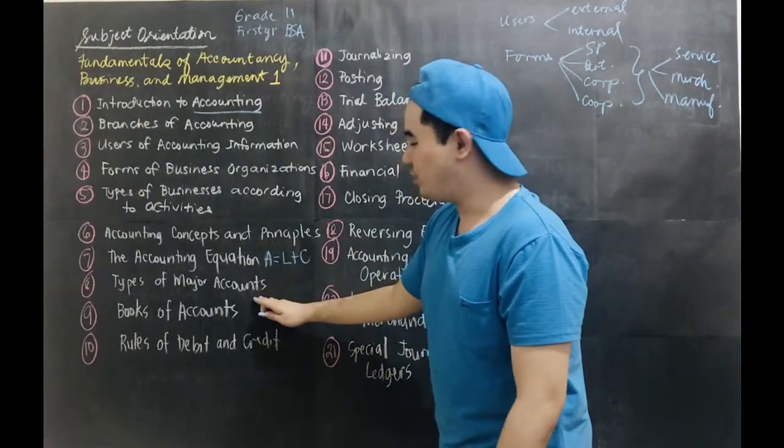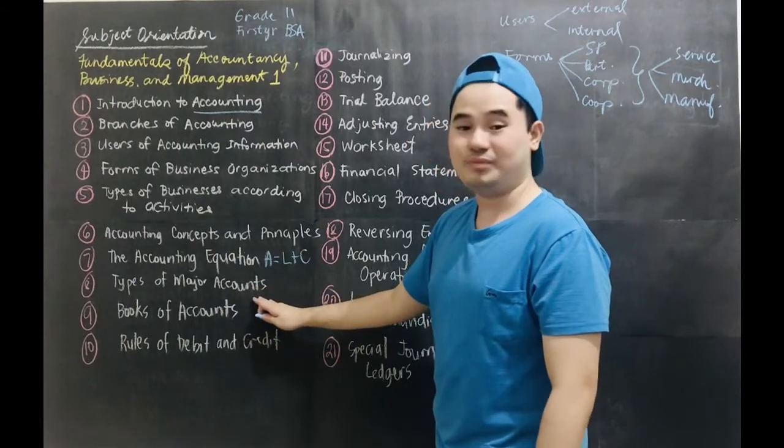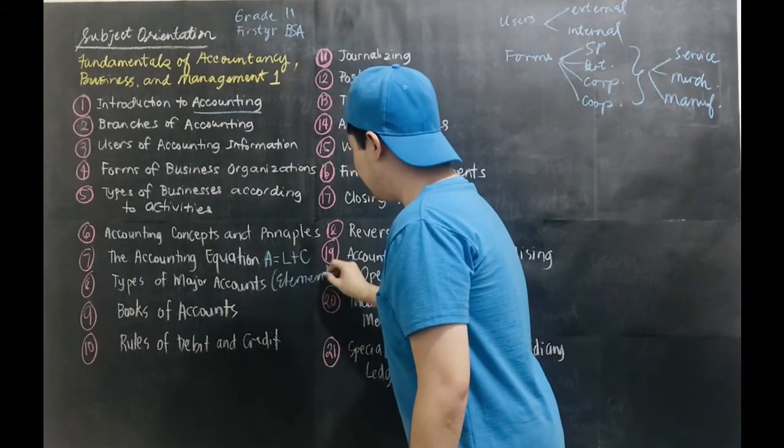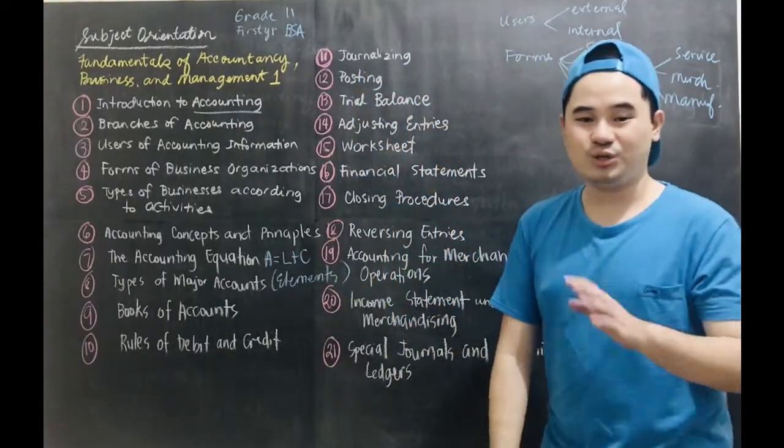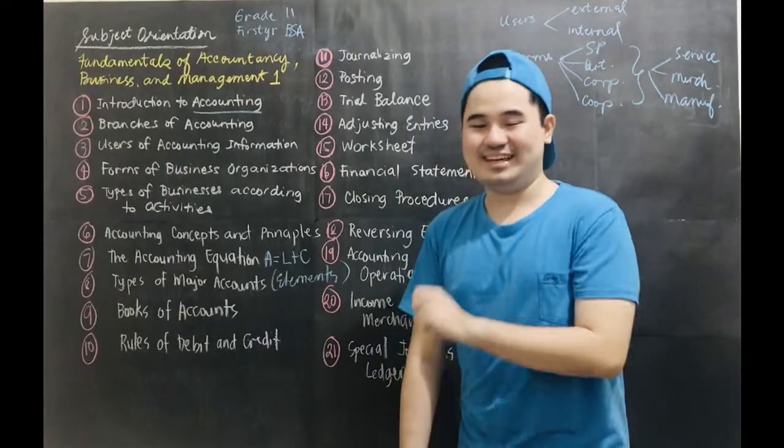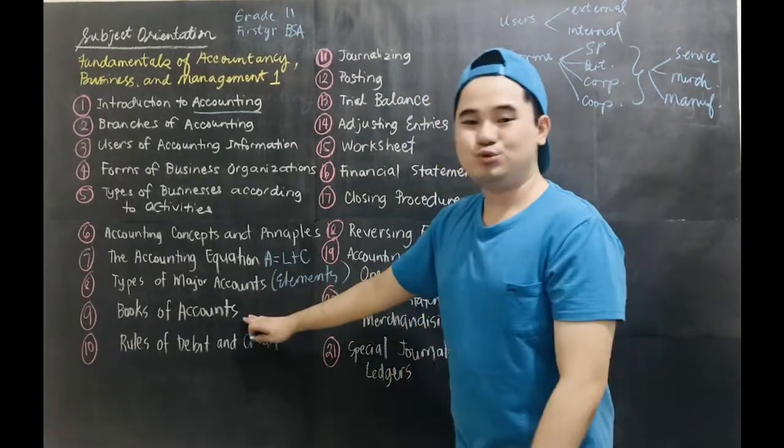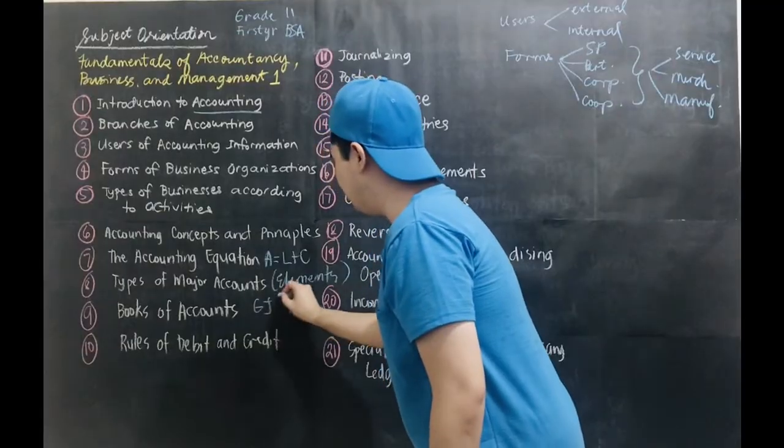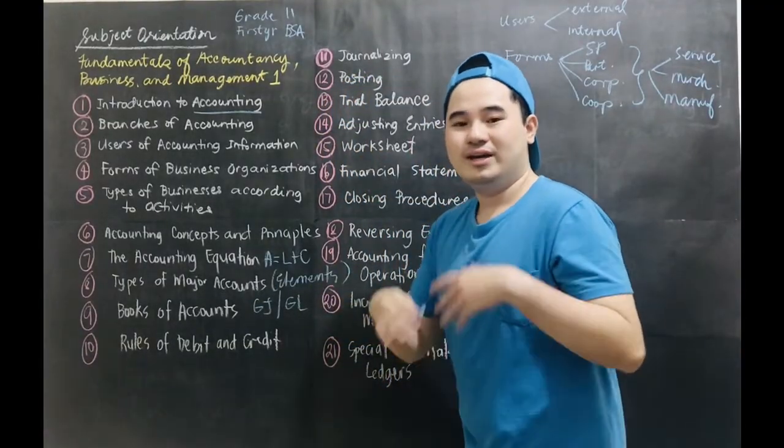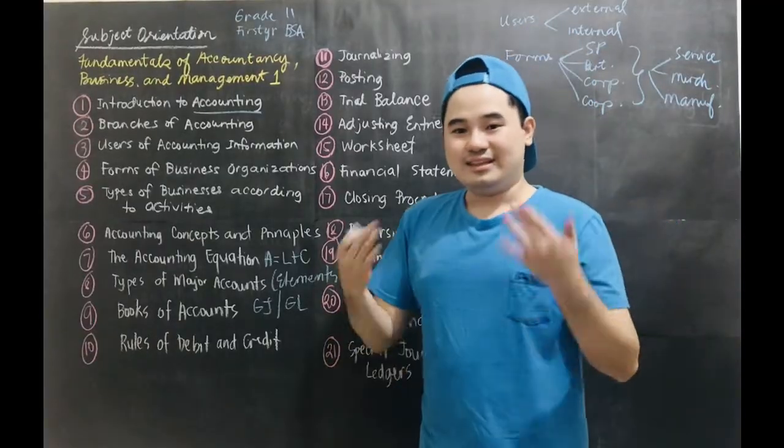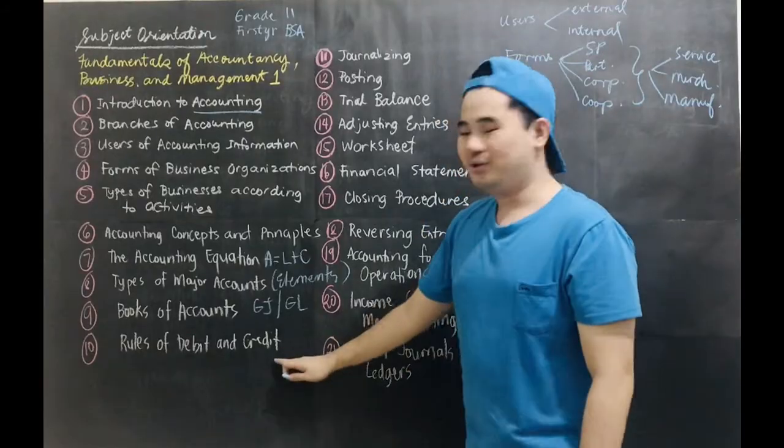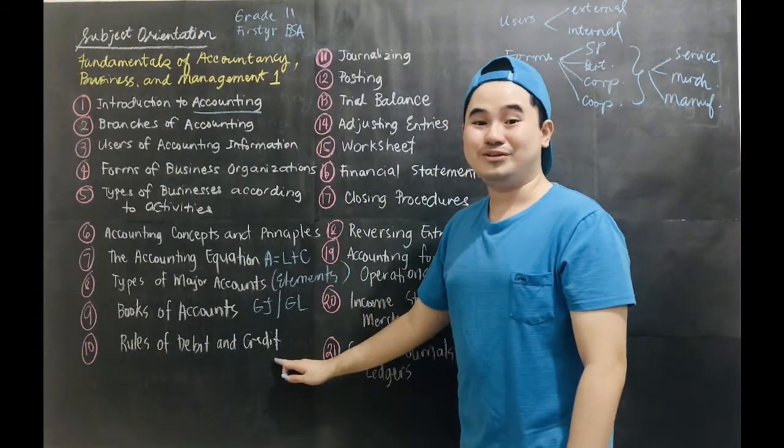And then we will also be talking about the types of major accounts, or the elements of financial statements, which includes your assets, liabilities, capital, revenue, and expenses. And then the two books of accounts, which is the general journal and the general ledger. We will also be talking about the books of accounts that accountants use to perform the whole accounting process.